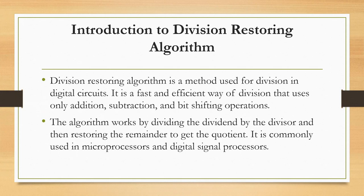If the result of the subtraction is negative, the divisor is added back to the dividend and the quotient digit is adjusted accordingly. The divisor and the carry are then shifted right by one bit and the process is repeated until the divisor is less than the original divisor. The quotient and remainder obtained from the algorithm represent the result of the division. The restoring algorithm is commonly used in hardware implementations of division because it requires a relatively small number of arithmetic operations and can be implemented efficiently using shift and add operations.